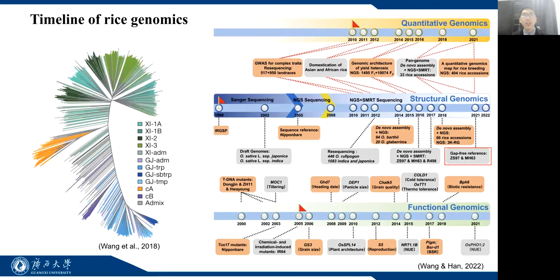Oryza sativa, comprising Indica and Japonica, are the two main types of Asian cultivated rice. Indica varieties account for more than 70% of global rice production and are more genetically diverse than Japonica.